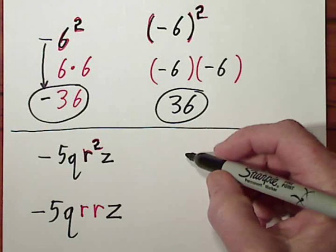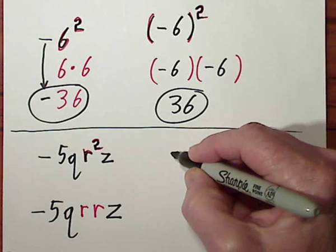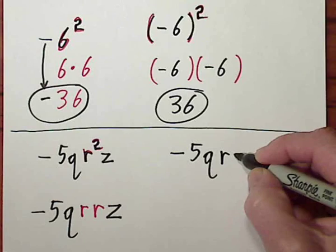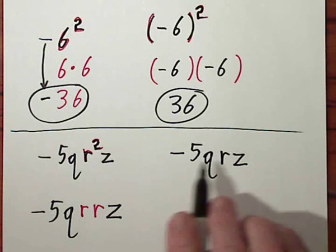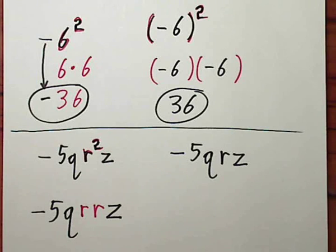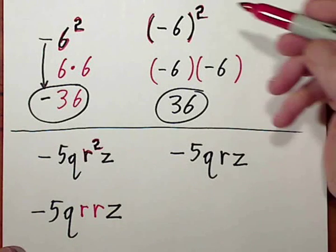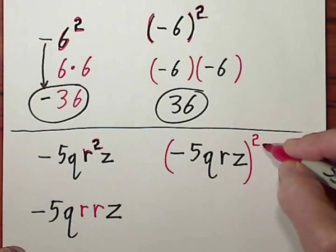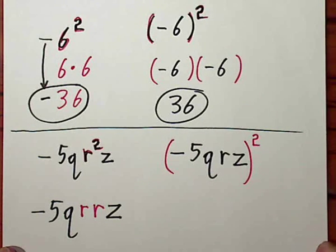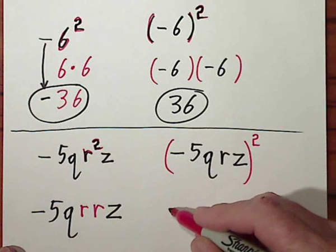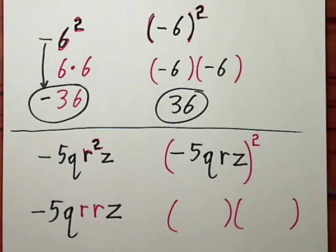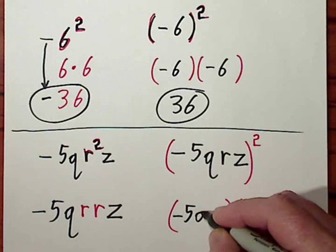But a different situation: if I have (-5qrz)² and I want everything here to be squared, the way I would do that, same way I did it up here, is I put parentheses around the entire expression with my exponent up here. In this case, we would have two sets of parentheses.